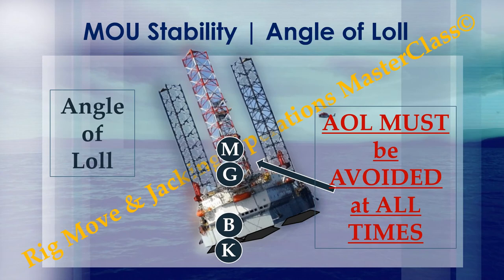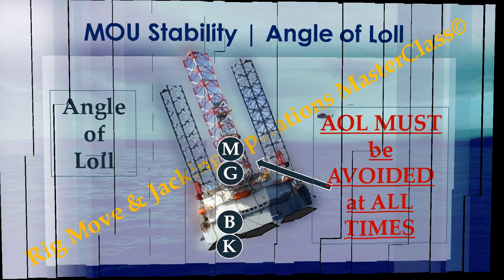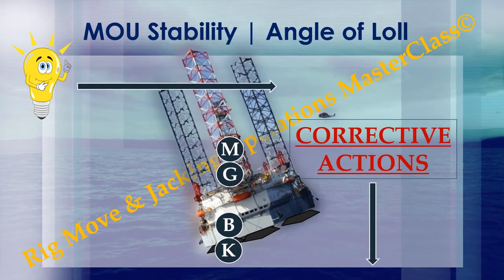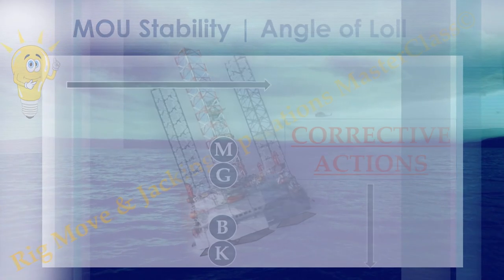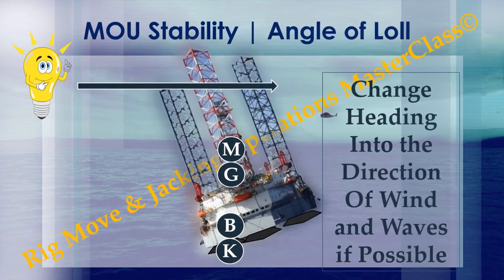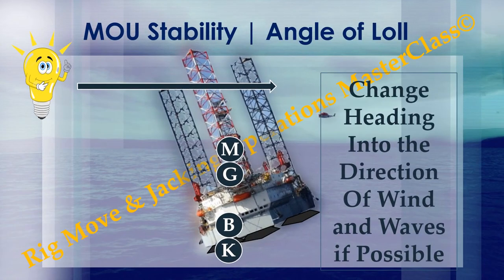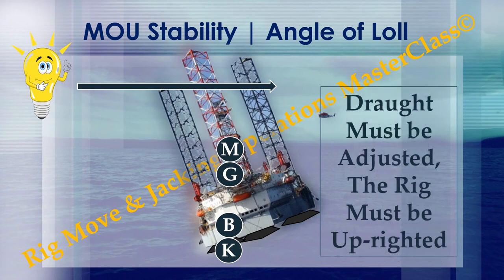Angle of loll must be avoided at all times. Corrective actions: change heading into the direction of wind and waves if possible, to avoid the rolling. Draft must be adjusted and the rig must be uprighted.